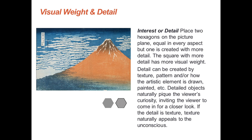Visual weight and interest or detail: place two hexagons in the picture plane, equal in every aspect except one is created with more detail. The hexagon with more detail has more visual weight. Detail can be created by texture, pattern, or simply how the element was created — how it was painted or drawn. Detailed objects naturally pique the viewer's curiosity, inviting the viewer to come in for a closer look. Texture naturally appears to us unconsciously as well.